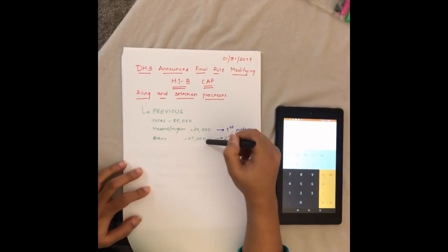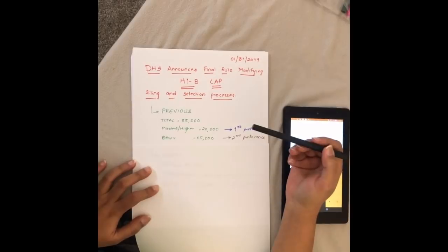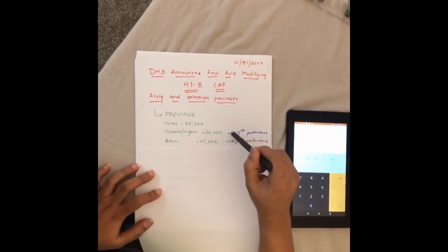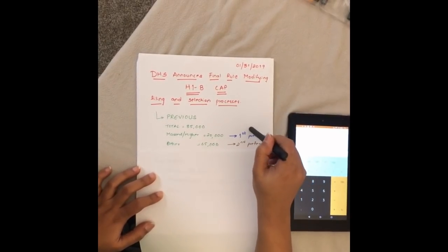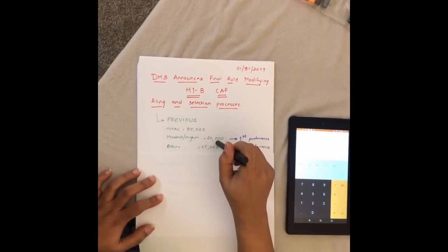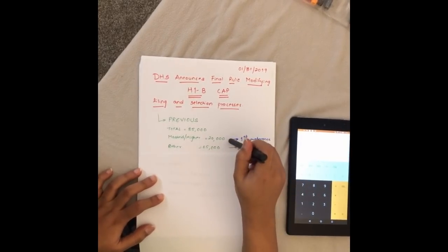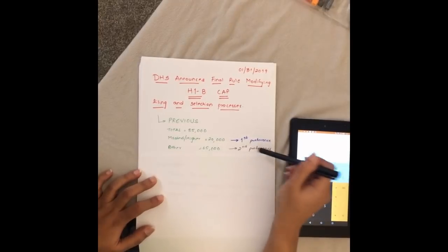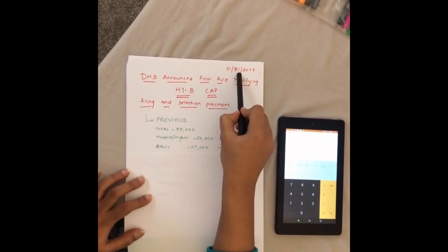The remaining applications used to go into the slot for 65,000. The process was that first preference was given to 20,000, so master students were first placed into the 20,000 category, and once that was filled, if they were not picked up, they were put into the 65,000 category as second preference.